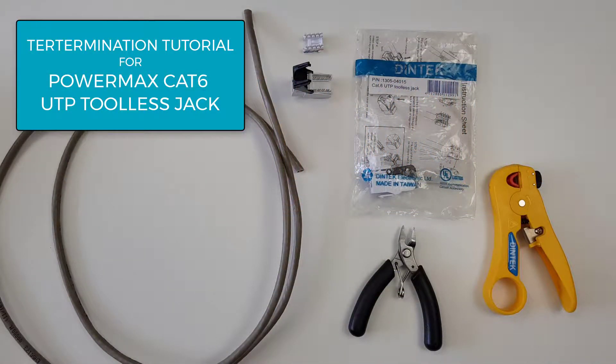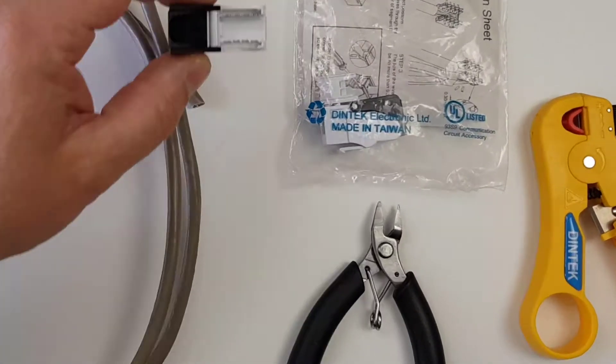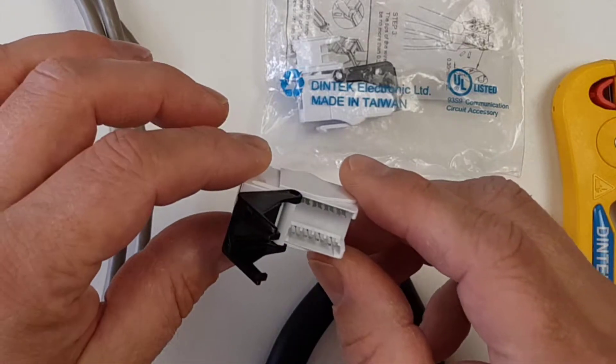Hello everyone, this is Paul from Dintec. In this tutorial we are going to be doing the termination of a Dintec Category 6 UTP solid-core cable onto a CAT6 tool-less UTP jack.